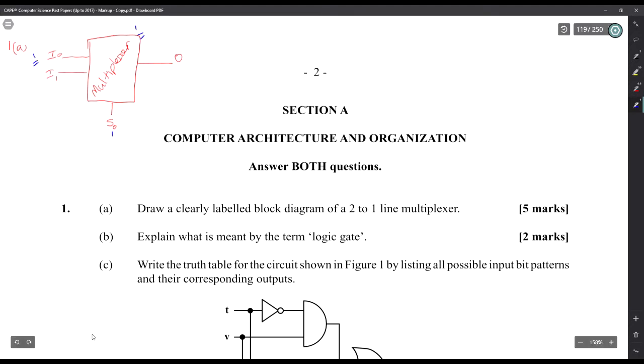Explain what is meant by the term 'logic gate'. A logic gate is an electronic circuit that gets an input and sends a particular output based on a set of rules.